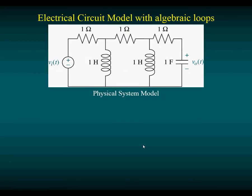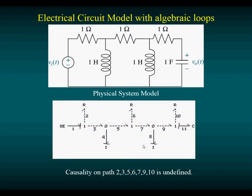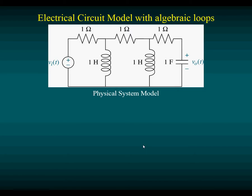Let's consider this electrical circuit, which doesn't seem anything unusual. But when you try to model this — it doesn't matter which method you try — you're going to get some mathematical difficulties. We produce the Bond Graph model here, and let me try to draw it on top of the system itself so you can see the problem.